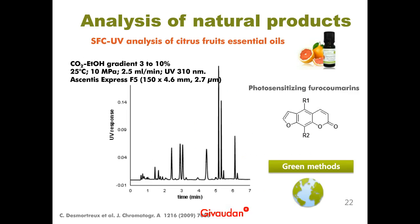Now a few examples with natural products. This application was developed with Givaudan, a Swiss manufacturer of flavors, fragrances, and cosmetic ingredients. The essential oils of citrus fruits all contain molecules belonging to the family of furocoumarins, which are photosensitizing and require accurate quantitation in cosmetic products. A simple and fast SFC method using only CO2 and ethanol in the mobile phase was developed for high resolution of many congeners of this structural family — a much faster and greener alternative to the HPLC method previously in use.